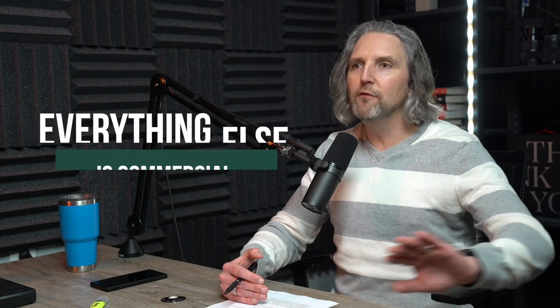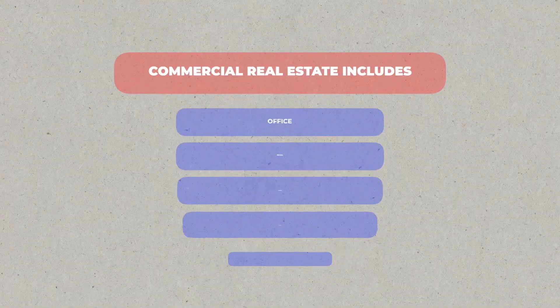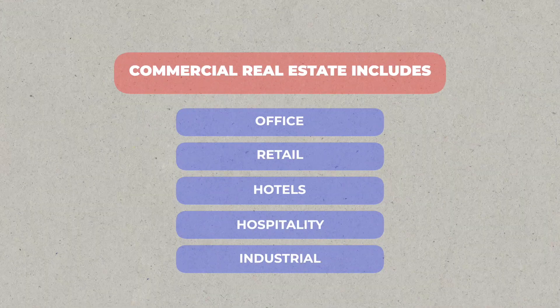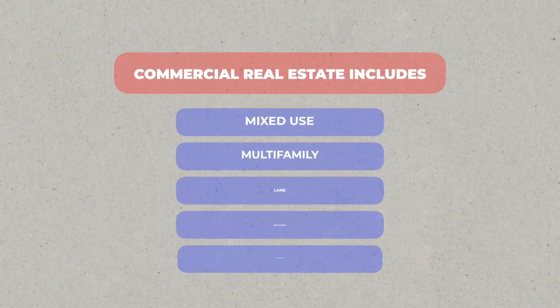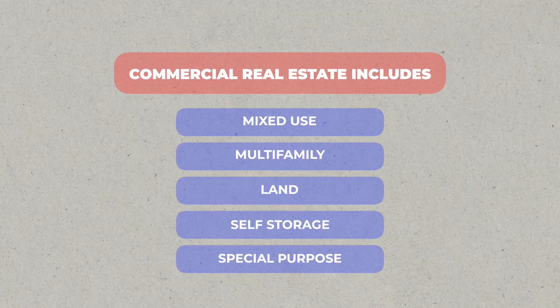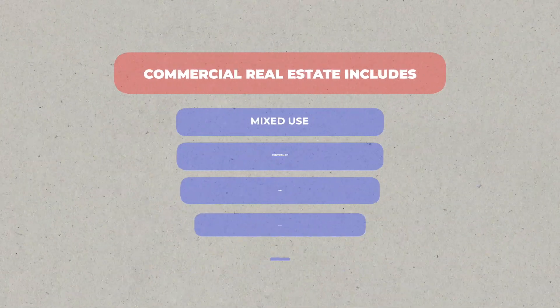Residential is single family houses, townhouses, condos, and multifamily four units and below. Everything else is commercial — everything. So that includes office, retail, hotels, hospitality, industrial, mixed use, multifamily, land, self-storage, and special purpose. Those are kind of your general commercial categories.